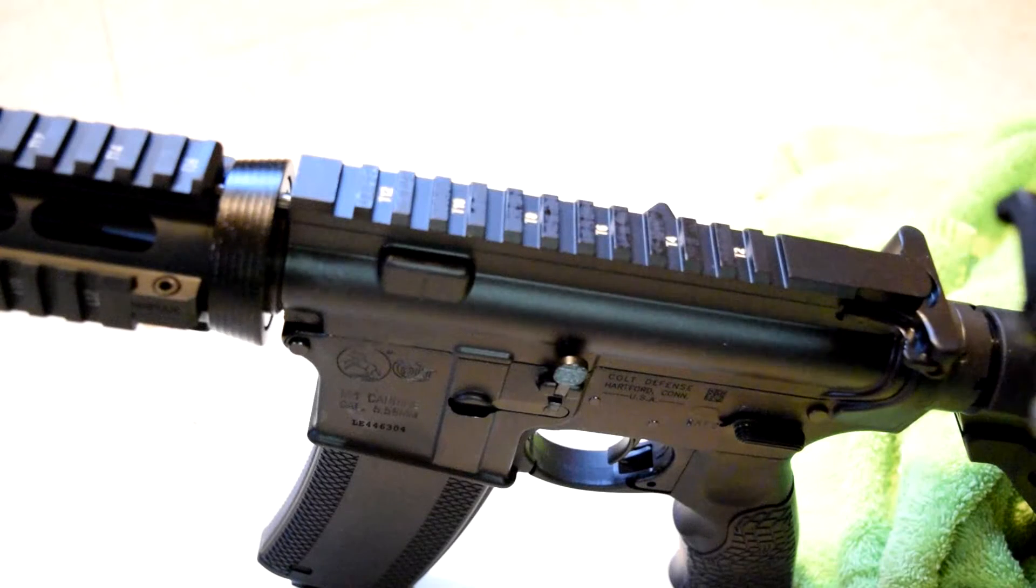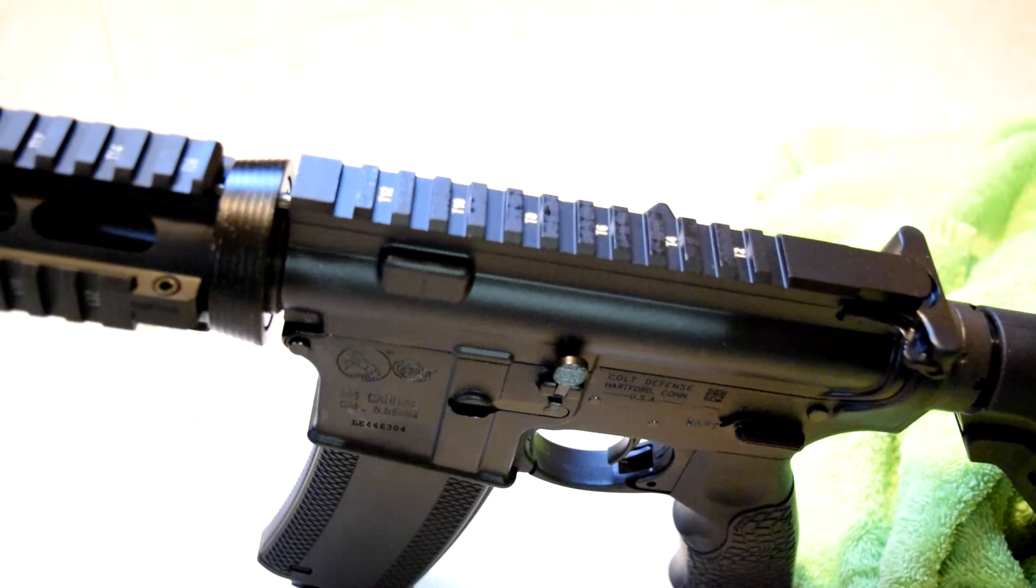The Cold M4 comes with a rail. You can put any optic you want on it. They also have the old style carry handle with sights built into it that you can attach to the rail.